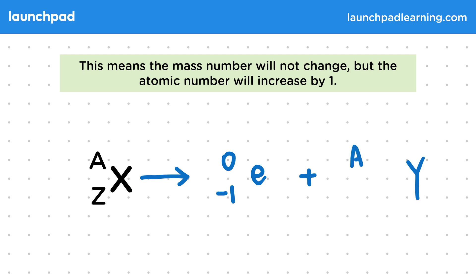The mass number has not changed, as no particles have been added or taken away from the nucleus. They've only changed from a neutron to a proton. We then add 1 to the atomic number, as there's one additional proton.